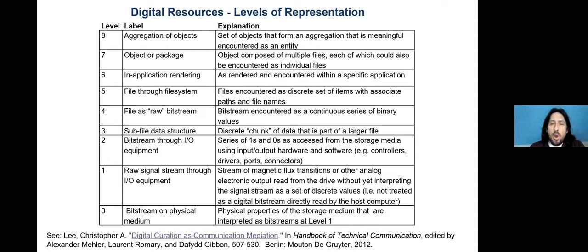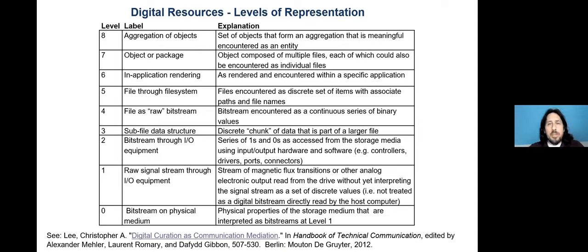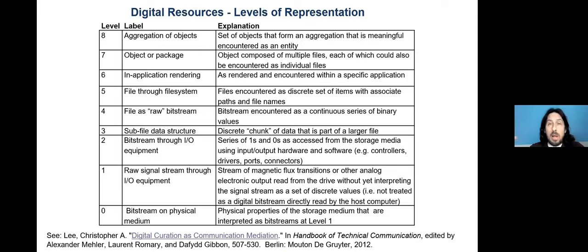We can think of objects or packages. From the OAIS reference model perspective, we have submission, archival, and dissemination information packages. The key aspect for this discussion is that they are packages — not just bit streams — with a lot of associated metadata. There's a somewhat murky boundary between objects and packages: preserving a web page means thinking about it both as something that renders and as an entity composed of images, spreadsheets, or other components.